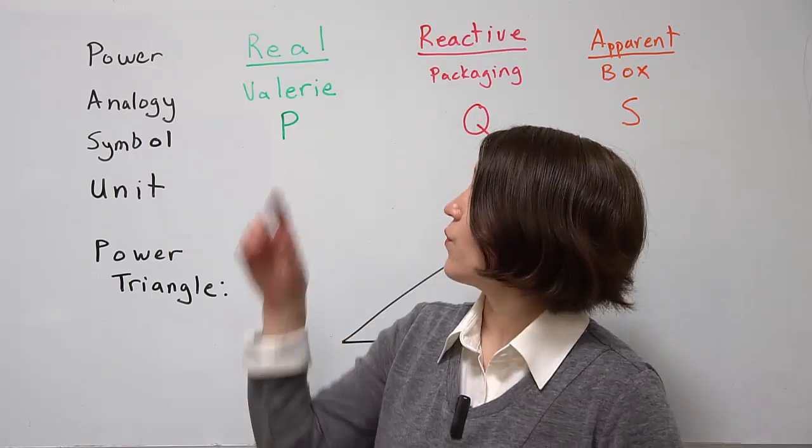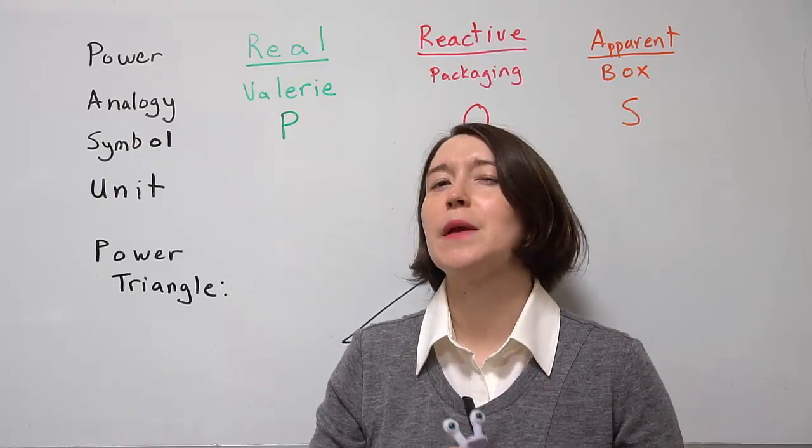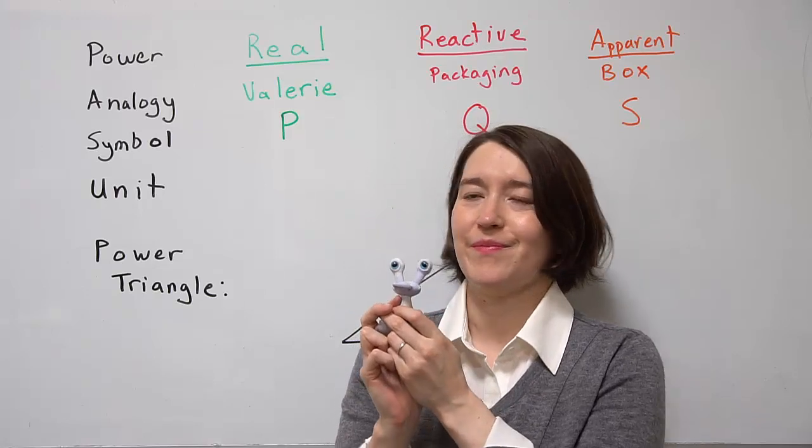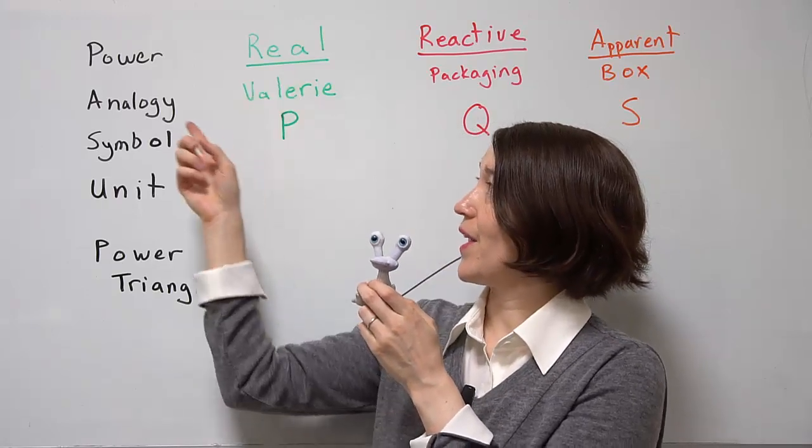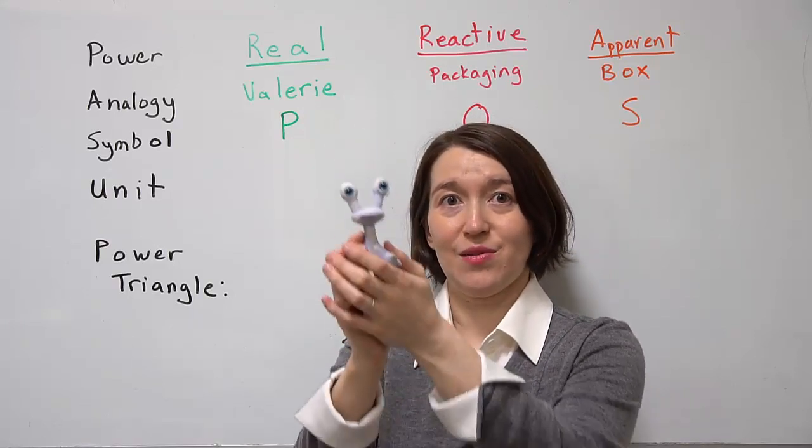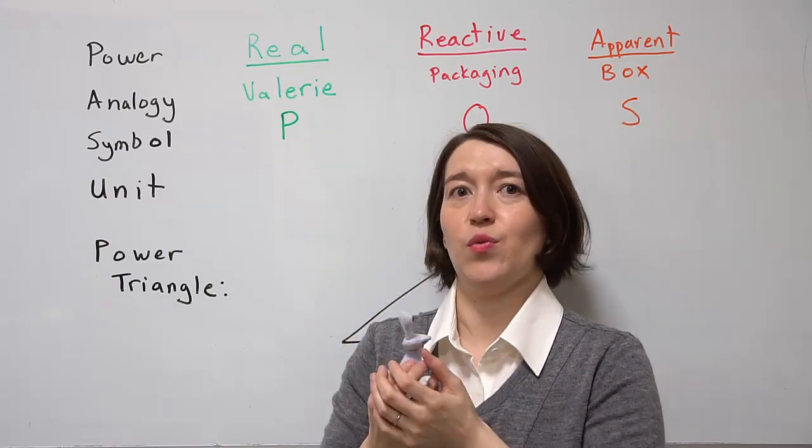The real part is the important part. Say I want to send you Valerie. Valerie is our analogy for the real power. She's what I want to send you. She's the valuable thing that you want to receive.